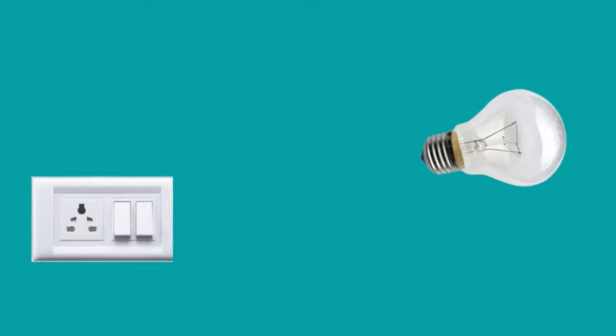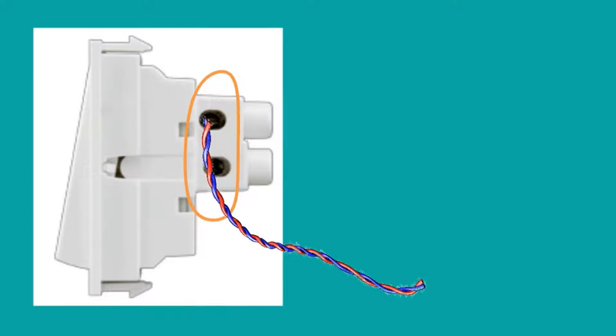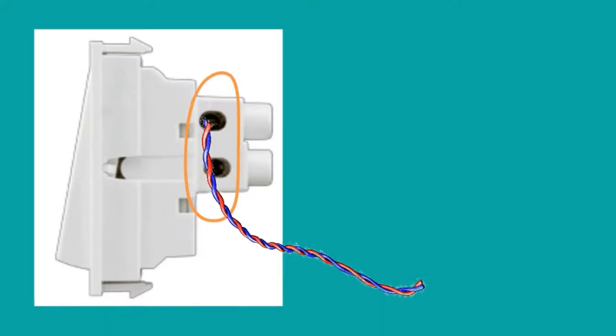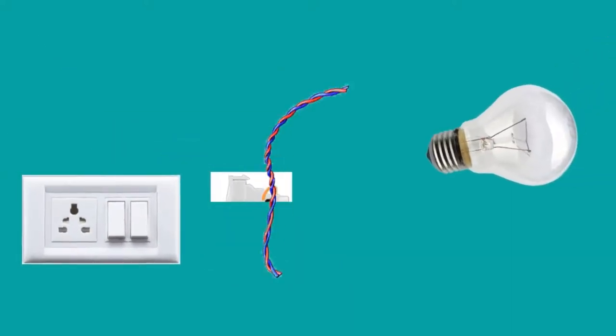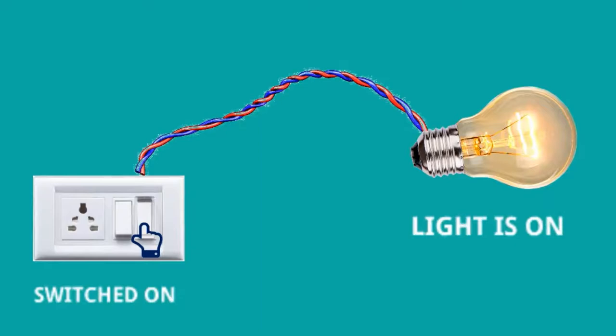This is a bulb and this is the switch. Initially the bulb is not giving light. If you see the side of the switch, we will see there are holes and this wire is fitted into the hole, and this wire will be connected between the switch and the bulb. Switch on, then light is on. But why is the light on when we switched on? It is very much clear: switch on, then light is on. If it is switched off, we will not get the light.